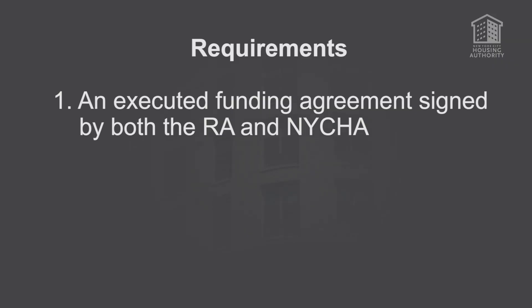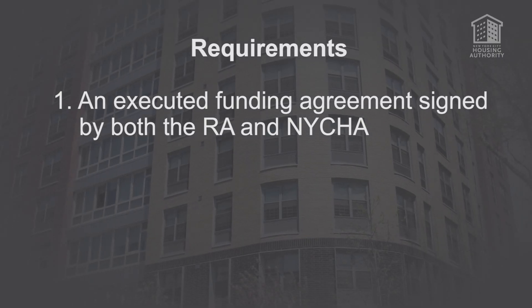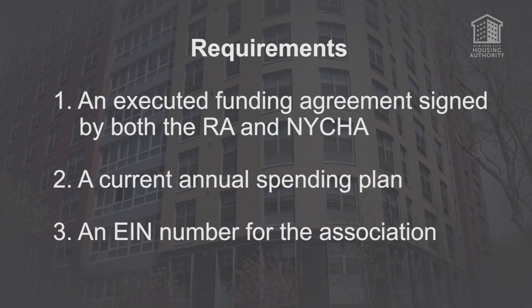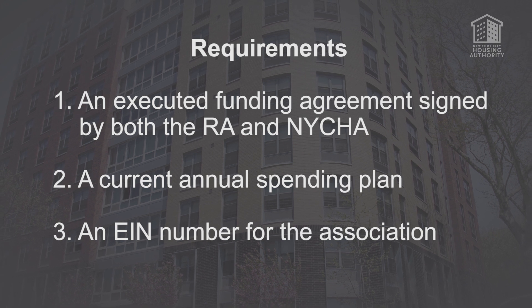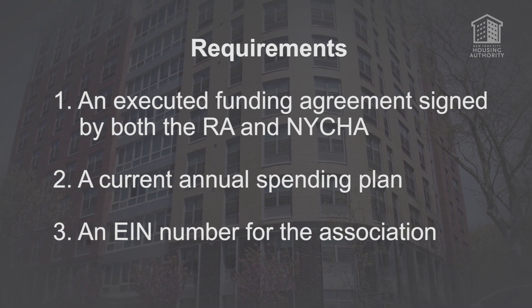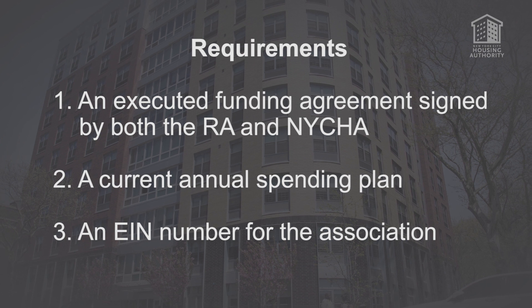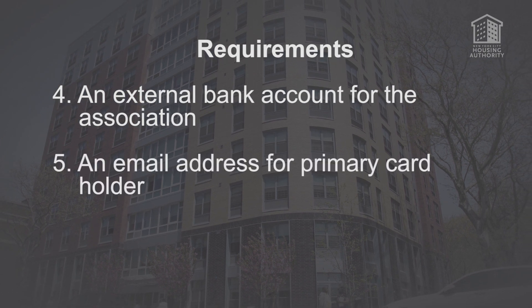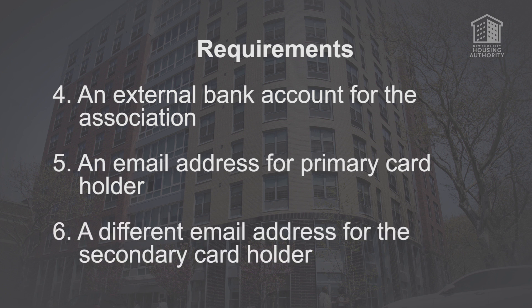Before you obtain the Commercial Credit Card, you must have an active resident association recognized by NYCHA with the current executive board term and the following requirements need to be met: an executive funding agreement signed by both the RA and NYCHA, a current annual spending plan, an EIN number for the association if you want an EIN number printed on your RA's card, an external bank account for the association, an email address for the primary cardholder, and a different email address for the secondary cardholder.